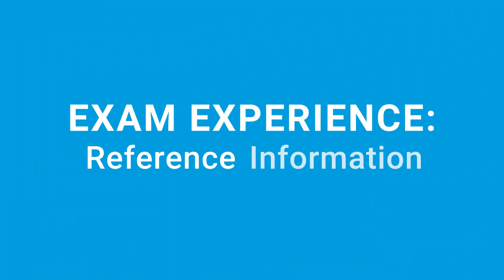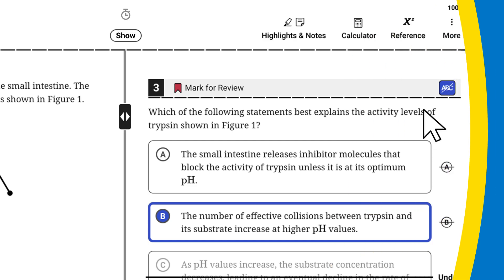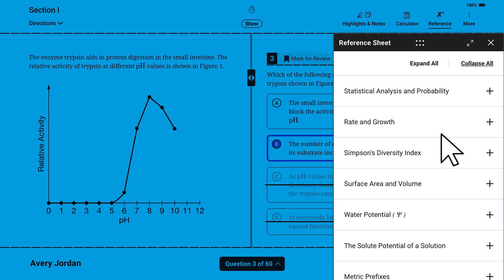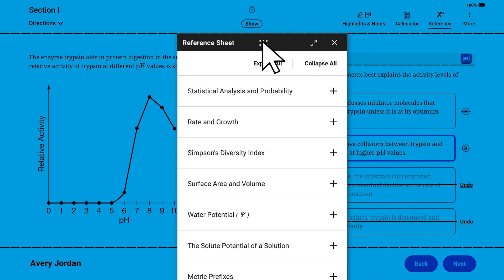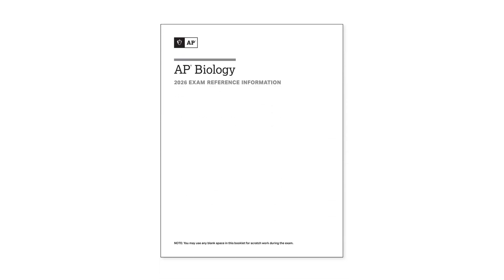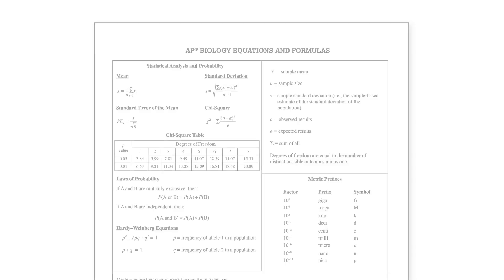Reference information for the AP Biology, Chemistry, Statistics, and Physics exams is available in Bluebook for both Section 1 and Section 2. To access reference information in Bluebook, click the Reference menu, then expand the relevant topic. This is the reference information for AP Biology. In addition, the proctor will provide each student taking an AP Biology, Chemistry, Statistics, or Physics exam with a printed copy of the reference information specific to their exam.